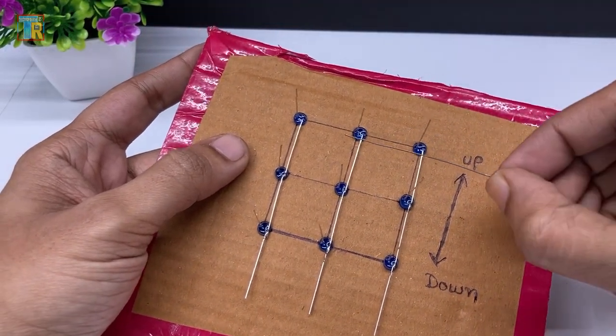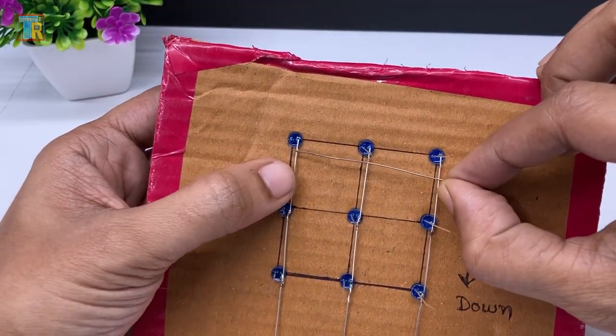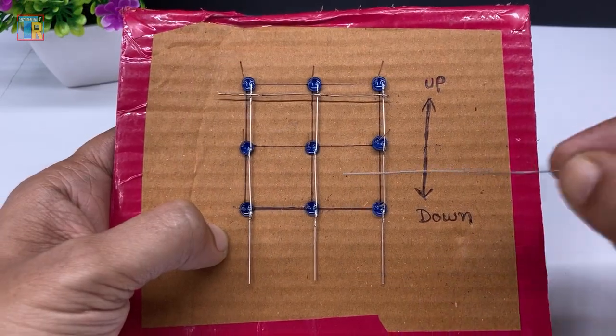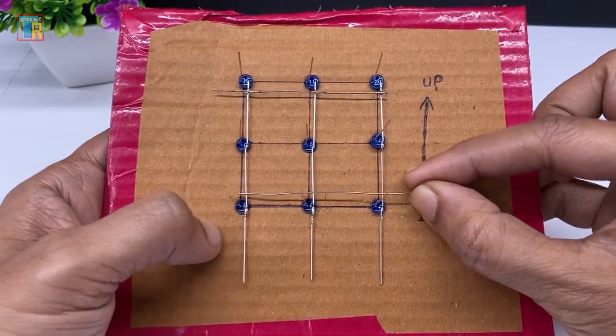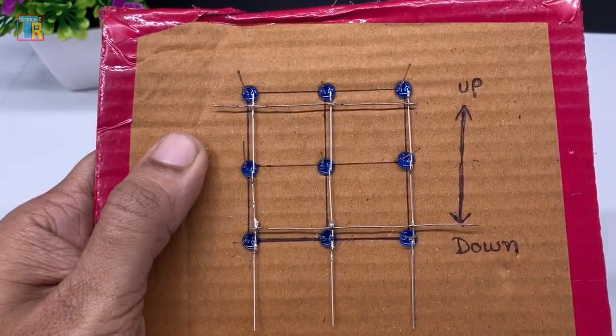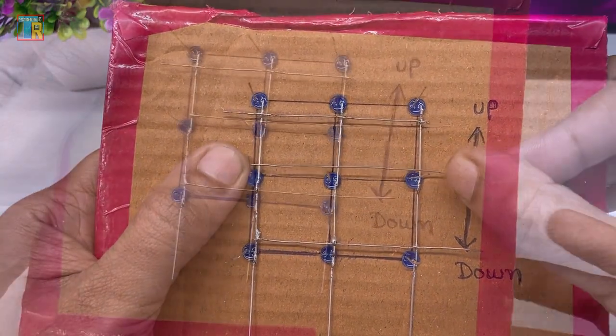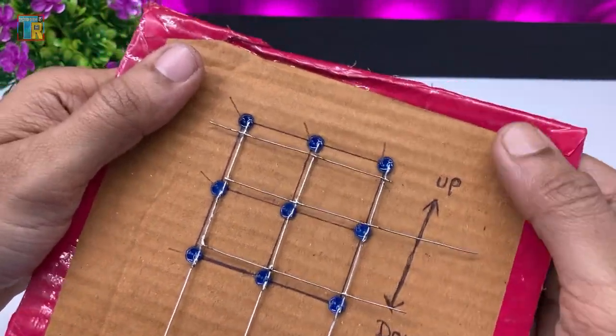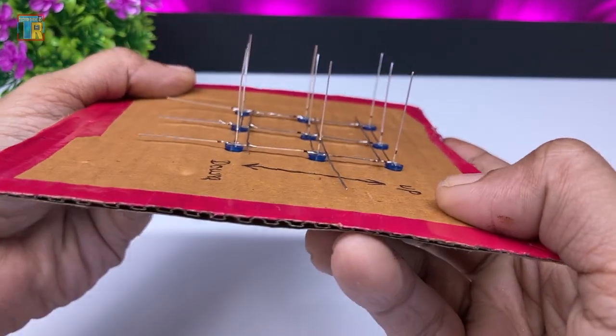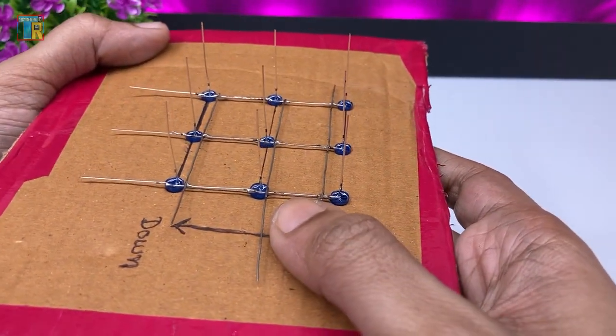Now connect all negative LED pins using a thick strong wire. This is not only for connection but also to provide strength to the LED structure. I am using a total of 3 wires to connect the negative pins of the LEDs.